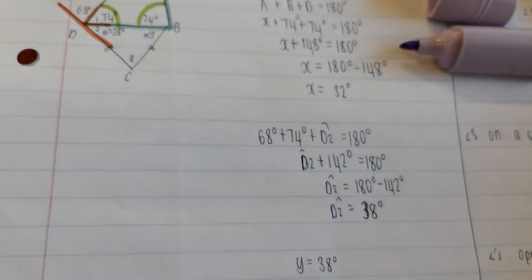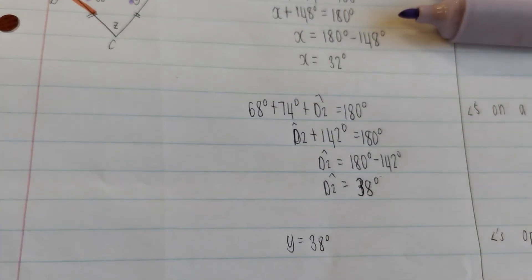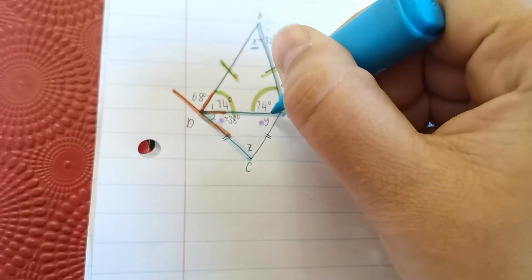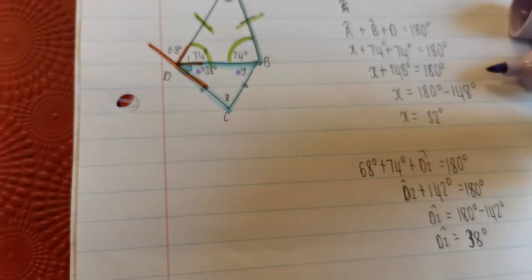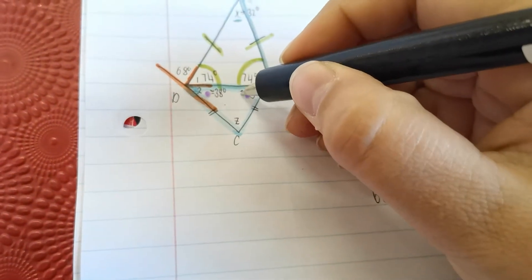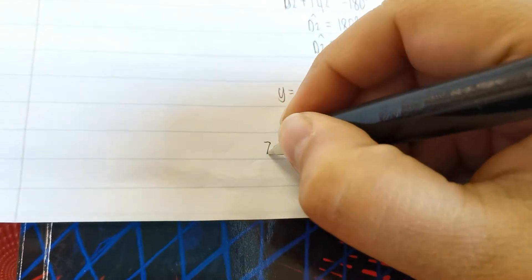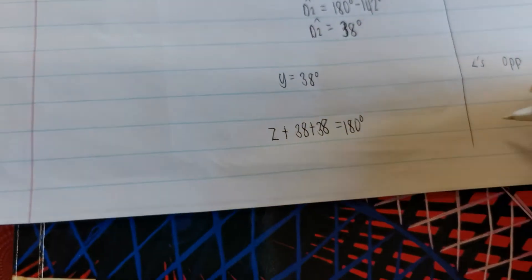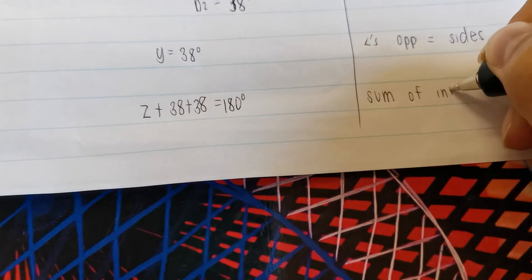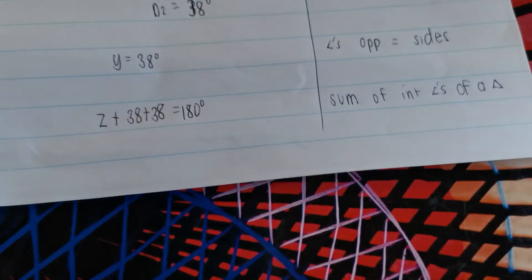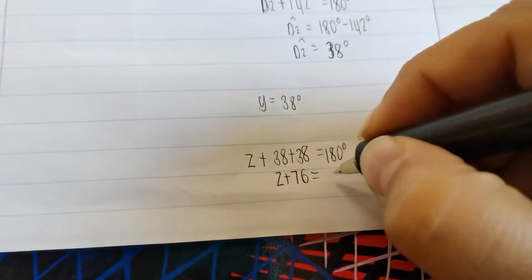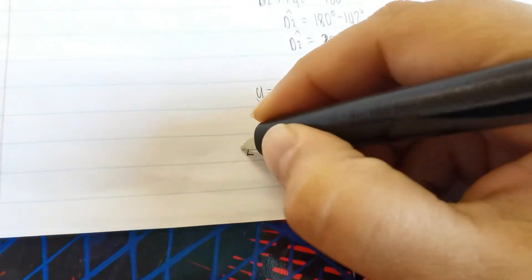Now working in the last triangle: the sum of angles must be 180 degrees. This angle is 38, and the other is also 38. So Z plus 38 plus 38 equals 180 degrees — reason: sum of interior angles of a triangle. That means Z plus 76 equals 180. You can skip steps; on your calculator just do 180 minus 76.